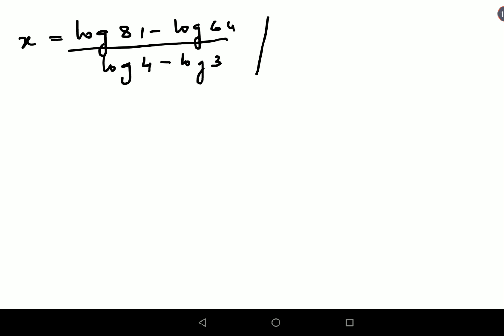So please remember 81 was basically 3 raised to 4 and 64 was 4 cubed. So using this you can eventually have an option saying it is 4 times log 3 minus 3 times log 4 upon log 4 minus log 3.